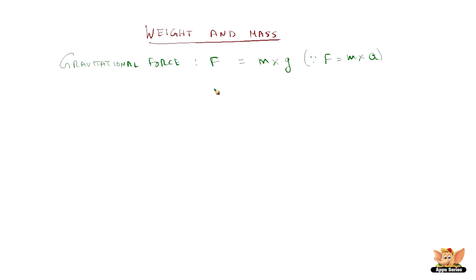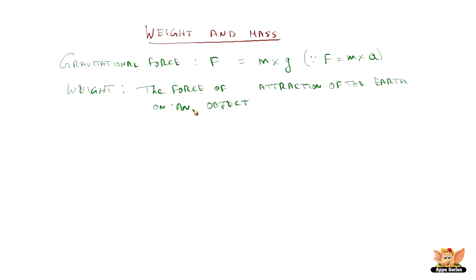Every object experiences a certain force because of the Earth's attraction. The force of attraction of the Earth on an object is called the weight of the object. So weight is to do with the object, and gravitational force is to do with the Earth. The force of attraction of the Earth on an object is called weight.